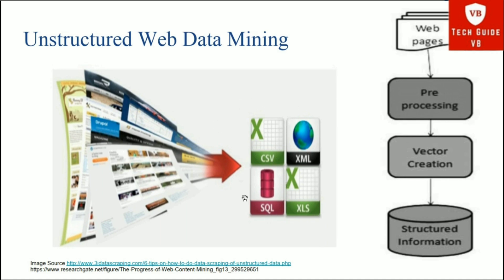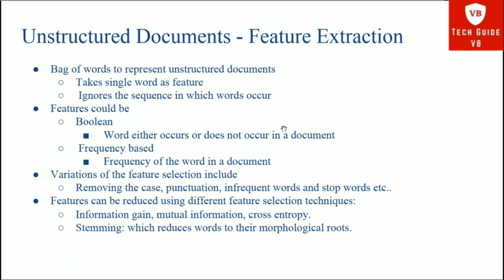Structured information can be generated in formats such as CSV, XML, SQL, or Excel. For feature extraction from unstructured documents, the bag-of-words model represents an unstructured document by taking a single word as a feature and ignores the sequence in which words occur. Features can be Boolean — a word either occurs or does not occur in a document — or frequency-based, counting how many times a word appears in a document.